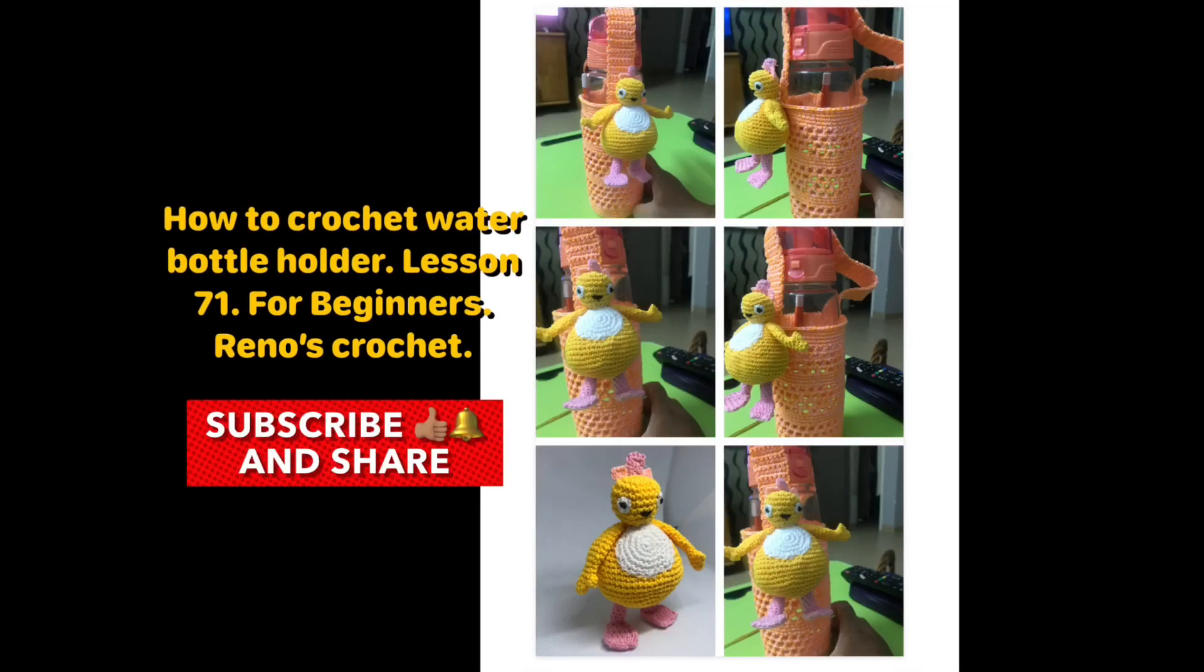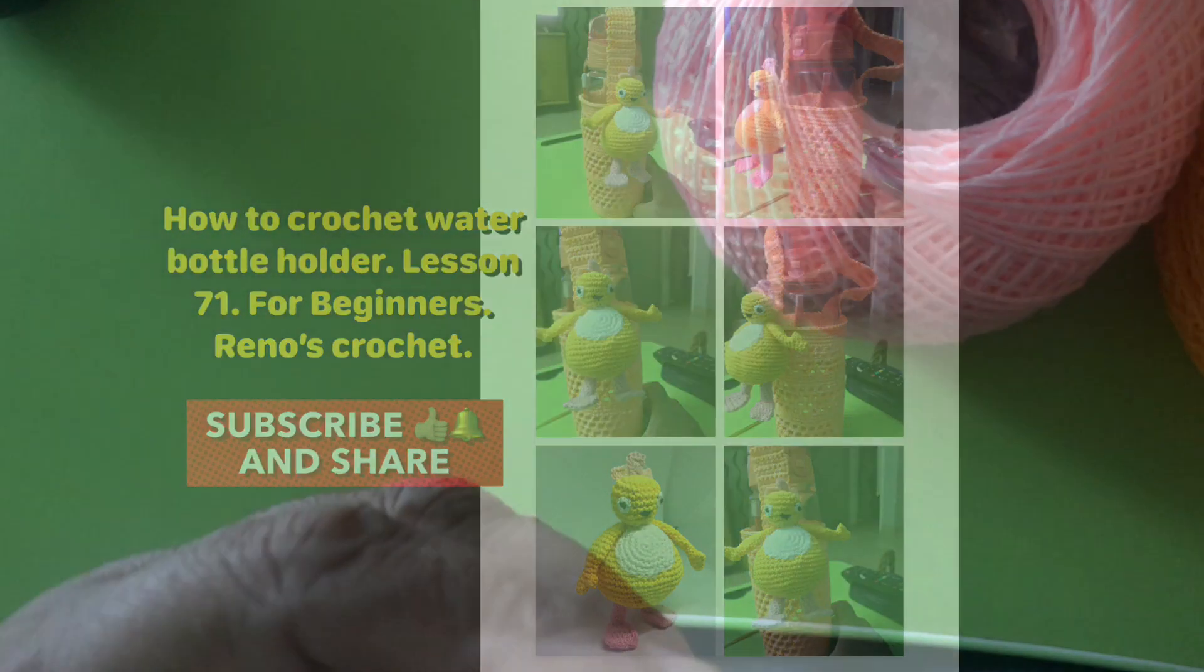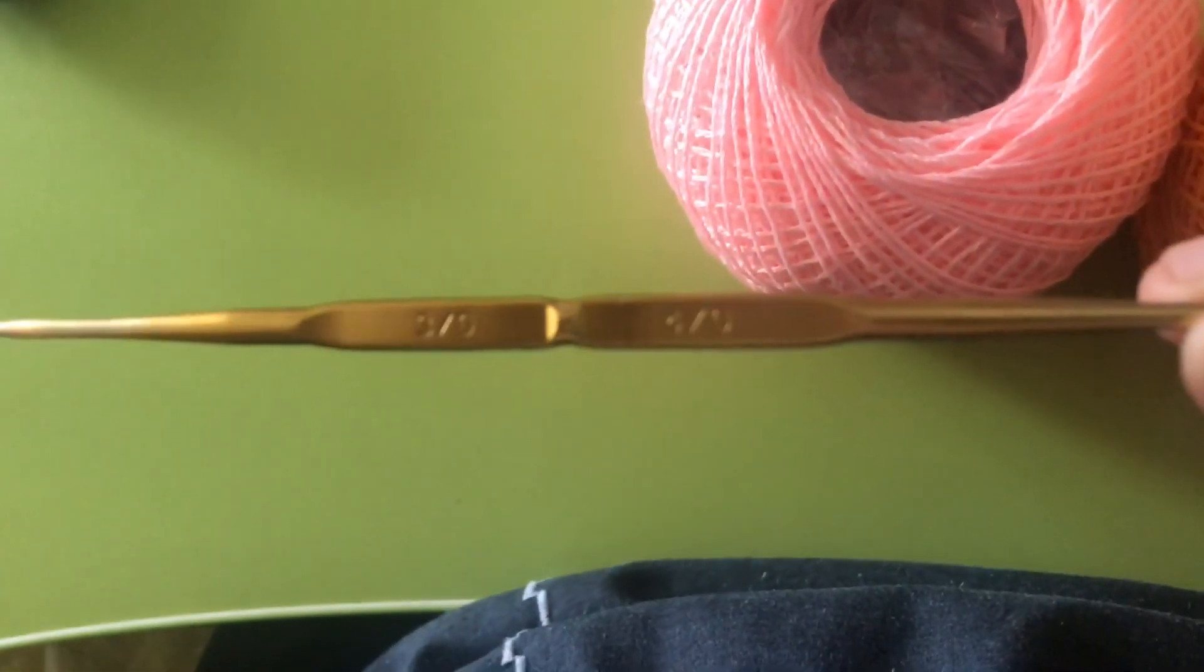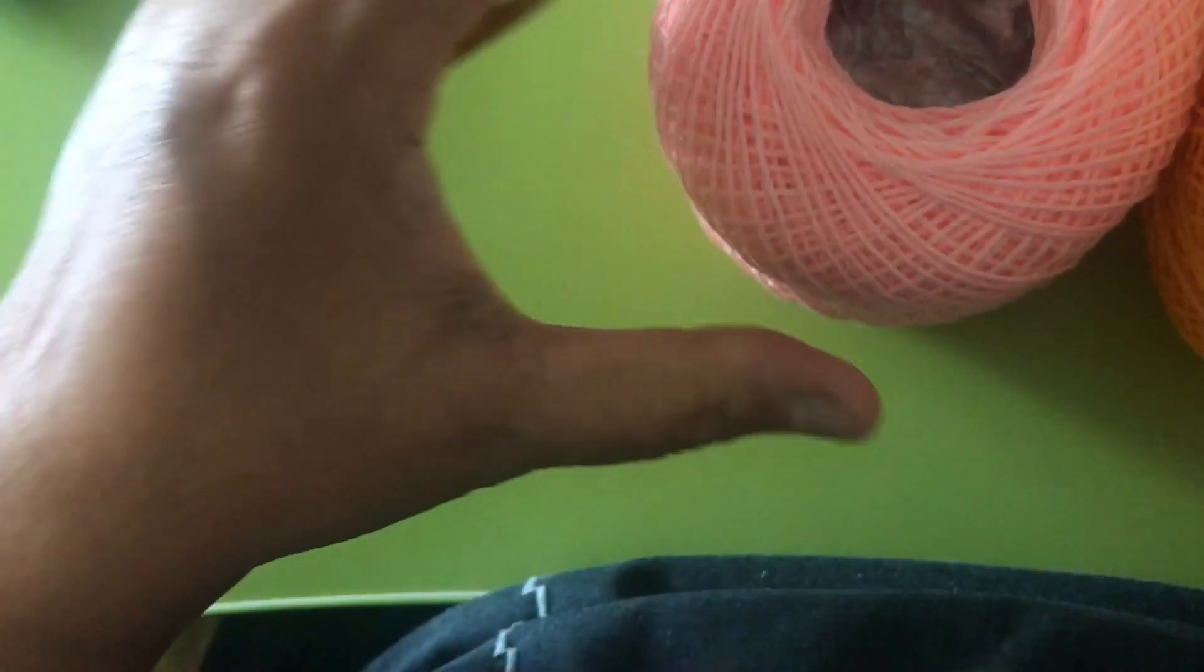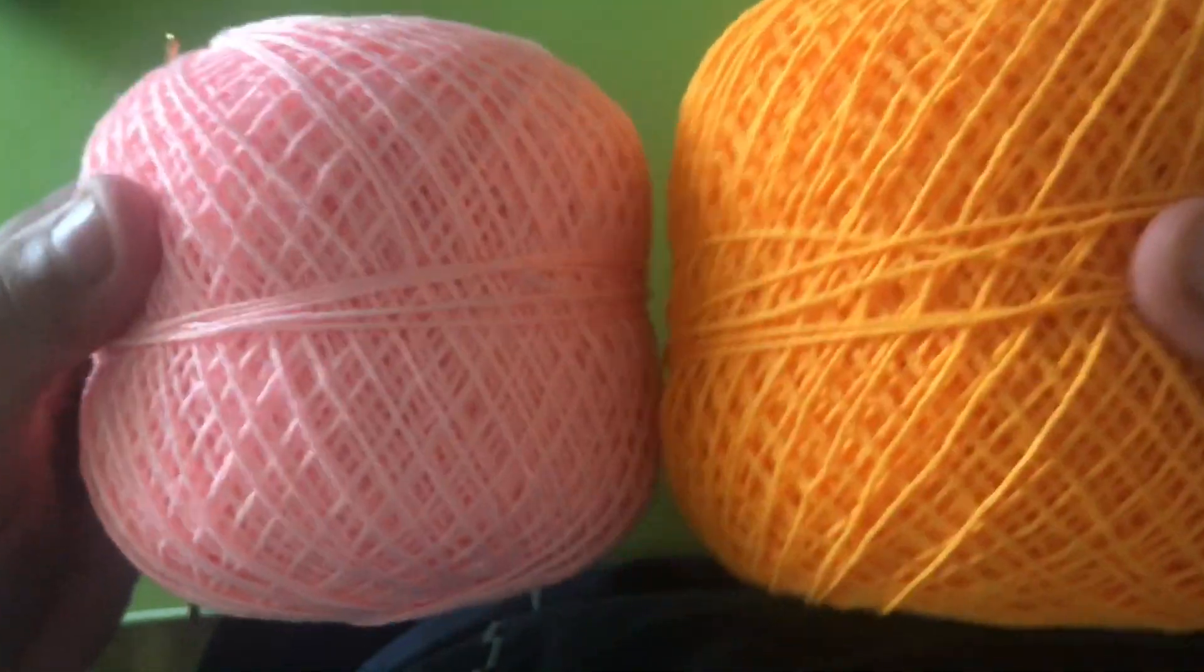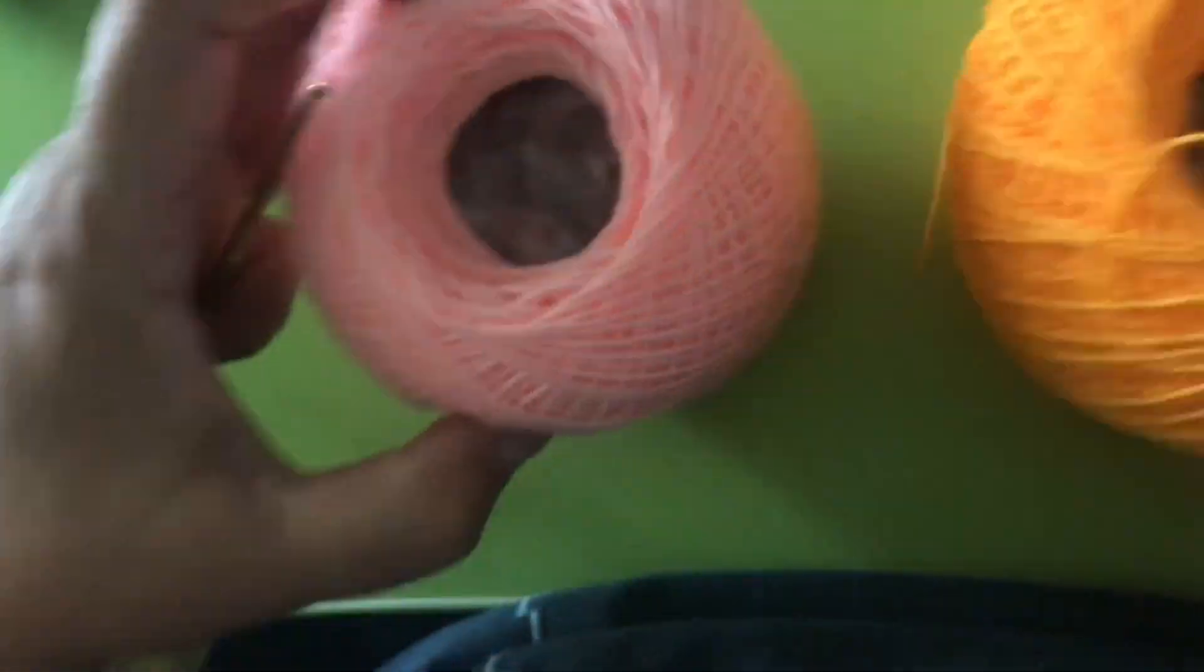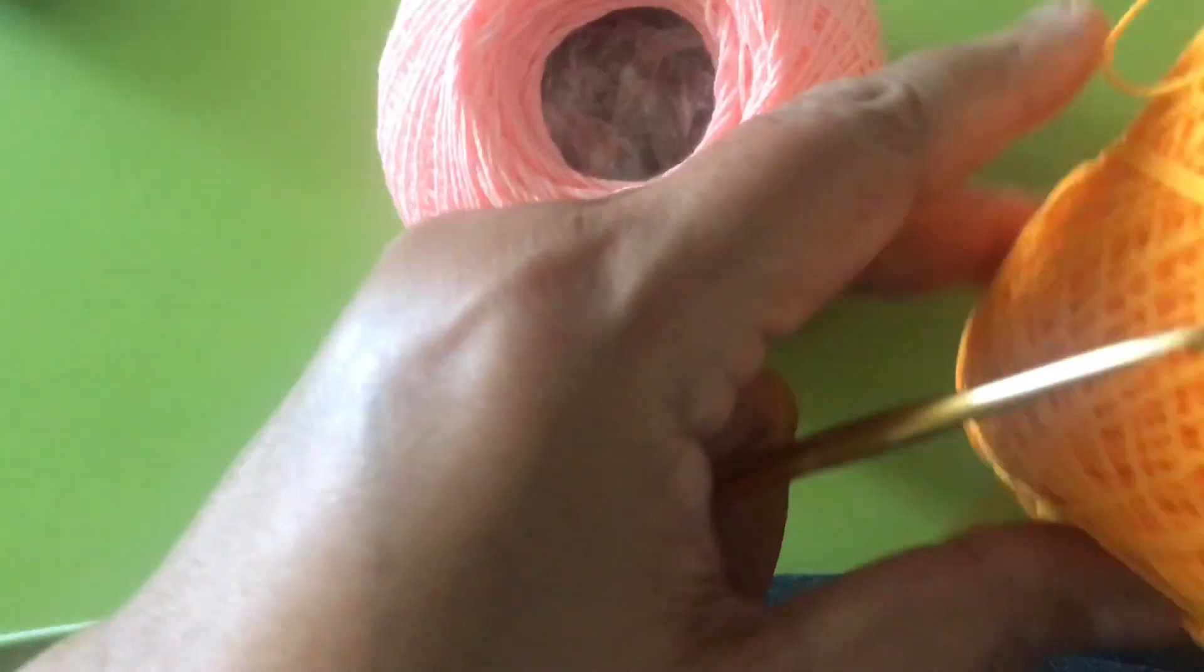Water bottle holder for beginners. Using three and four polythreads, I'm using two threads.